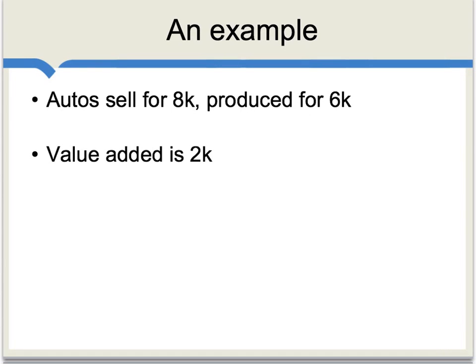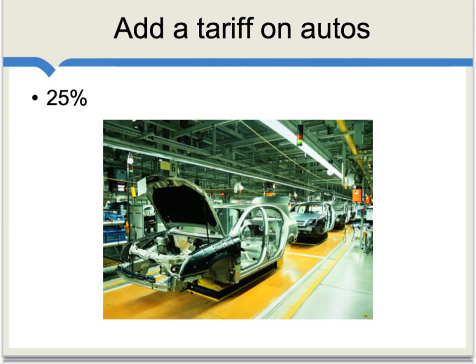Let's take an example. Say, for instance, that automobiles are selling for $8,000, they are produced for $6,000, and that will mean per automobile a value added of $2,000. Now, we're going to add a tariff on automobiles coming in from foreign nations, and the size of that tariff will be 25% of the price of the automobile sold.